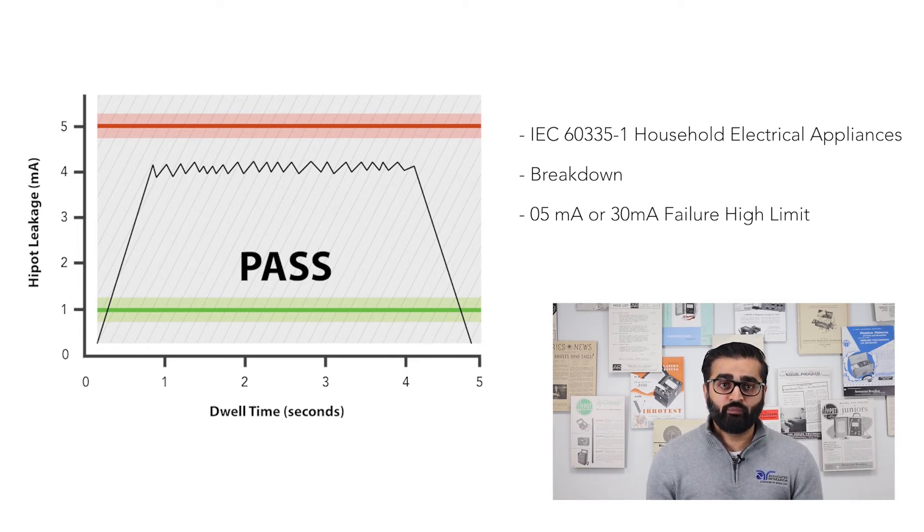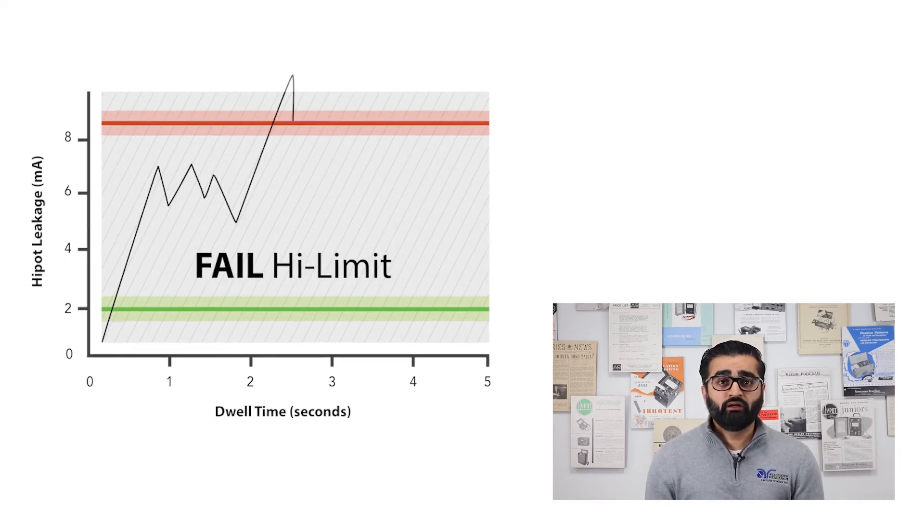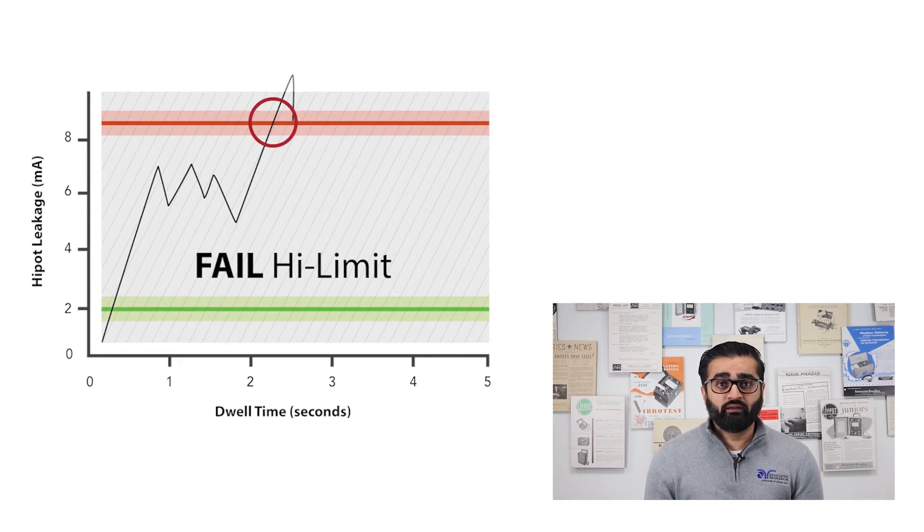This essentially gives us the high limit that's needed to be programmed into the test equipment. In order to pass the high pot test, the current must remain under 5mA or 30mA high limit. A test is considered a high limit failure if the current ever exceeds this value during the test.